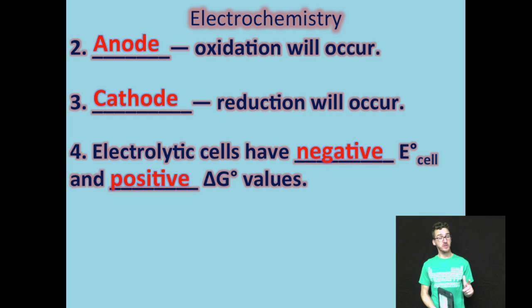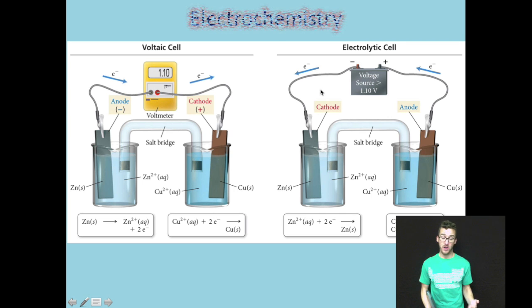However, in electrolytic cells, our cell potentials are going to be negative and our delta G values will therefore be positive. So take a quick moment and stare at that image in your notes or on the screen.